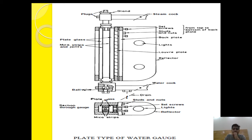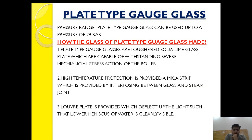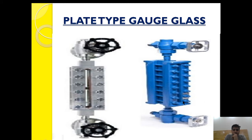This is how the whole plate type gauge glass is constructed. As you can see, this is the steam part and this is the water part, with a ball valve, and the whole thing is held in place with the help of studs and nuts. This is how the plate type gauge glass looks: the front plate, the back end plate, and the front and second tubes are all held together by the stud. In between the back plate and front plate there are three elements: the first glass plate, second glass plate, and lube plate, all held together by studs.